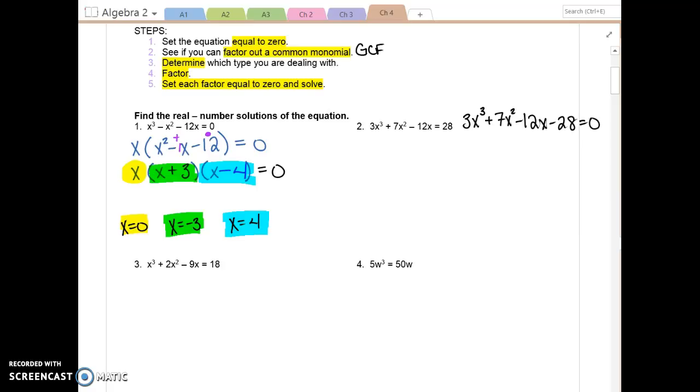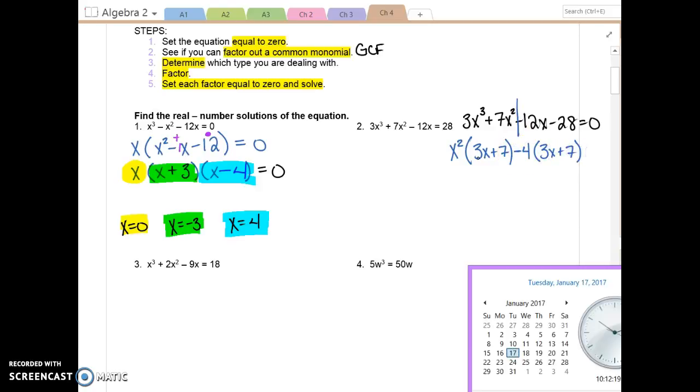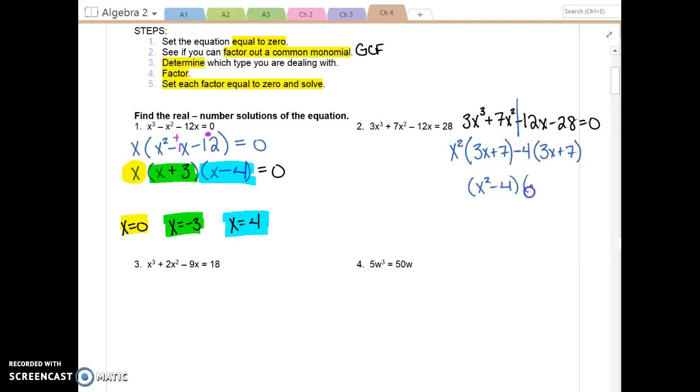Step 3, determine which type you are dealing with. If it's four terms and you can't factor out greatest common factors, that's when you split it down the middle and factor by grouping. Take a moment and factor the first group, factor the second group. In the first group, it looks like they have x squared in common. You can use that first set of parentheses to help you figure out what the second group has in common because you want the parentheses to say 3x plus 7, so they must have negative 4 in common.